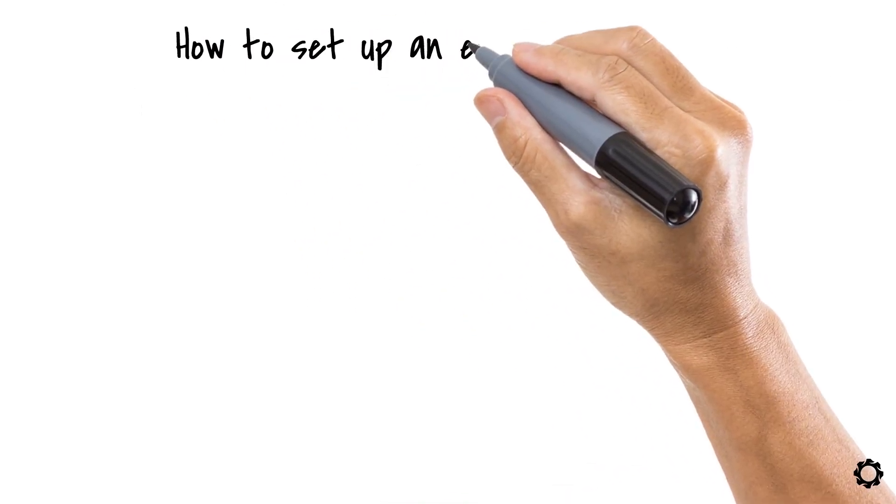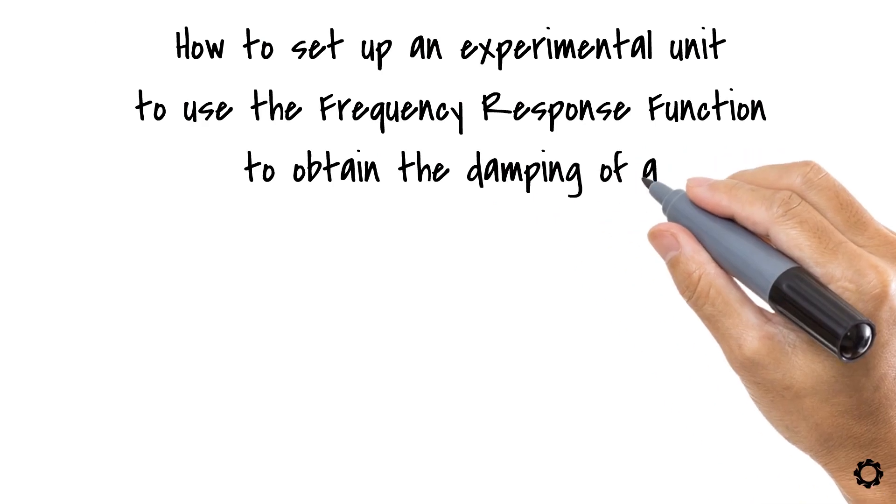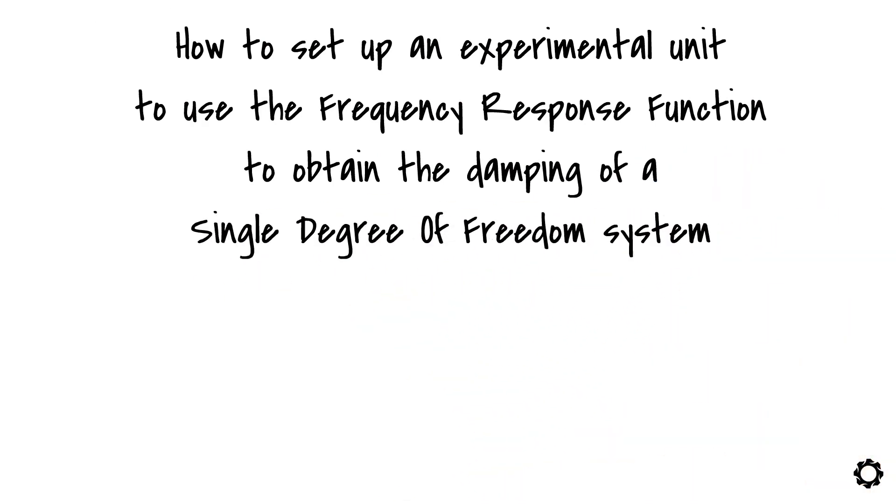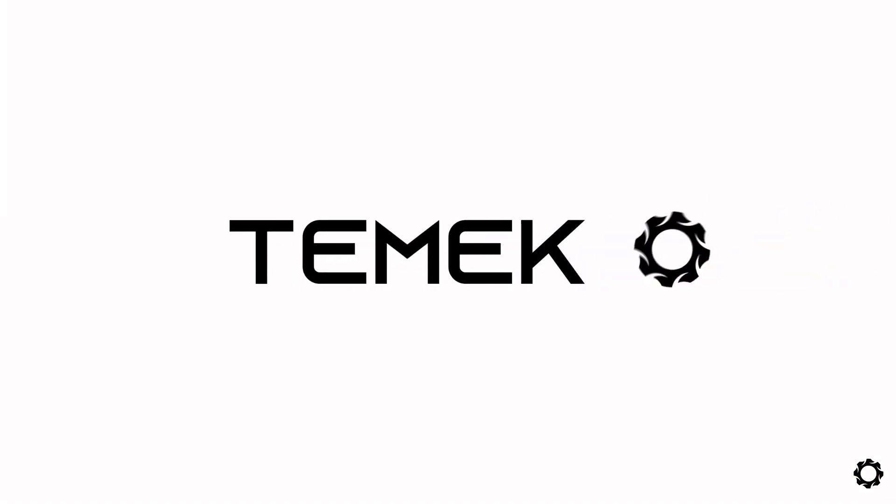In this chapter we learned how to set up an experimental unit to use the frequency response function to obtain the damping of a single degree of freedom system. You know now that this experiment consists of matching the theoretical formulation for damping with the results obtained from the experiment. Thanks for joining us in the interesting world of dynamics and see you soon.